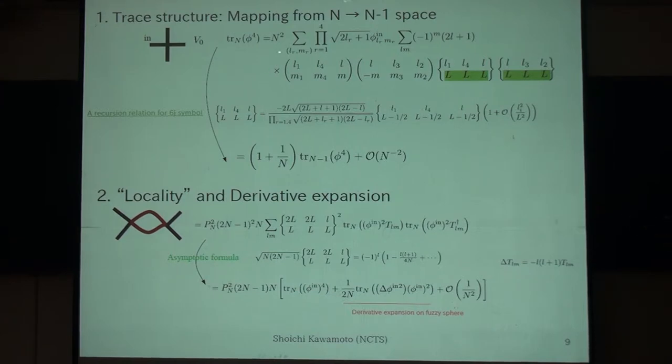So, this kind of mapping is by using the explicit form of the 3j symbol, the 6j symbol, and some recursion relation for the 6j symbol. We can derive these type of relations.